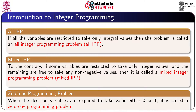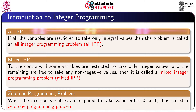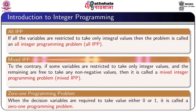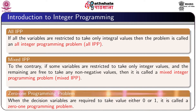If p equals n, that is if all the variables are restricted to take only integral values, then the problem is called an all integer programming problem or all IPP. On the other hand, if some variables are restricted to take only integral values and the remaining are free to take any non-negative values, then it is called a mixed integer programming problem or mixed IPP. When the decision variables are required to take value either 0 or 1, it is called a 0-1 programming problem.